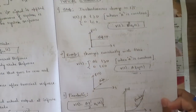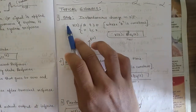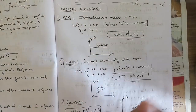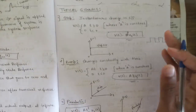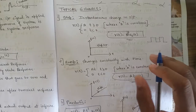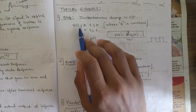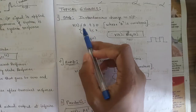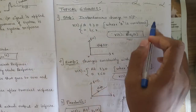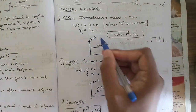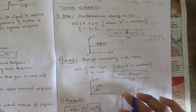Now let's look at some typical signals, which are very important for future concepts. The first is the step signal — an instantaneous change in input. In binary terms, it represents zeros and ones. It is defined as r(t) = A when t ≥ 0, and r(t) = 0 when t < 0, where A is a constant. The graph shows the value jumping from 0 to 1 — a sudden step change.